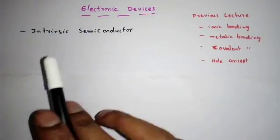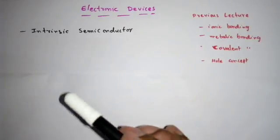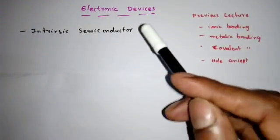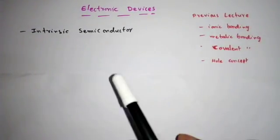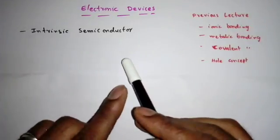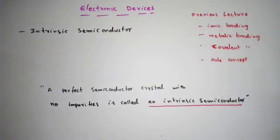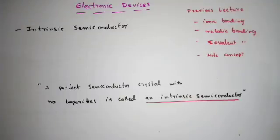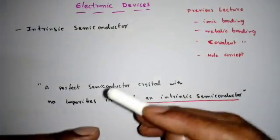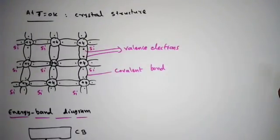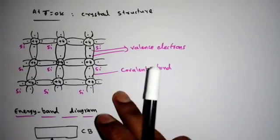An intrinsic semiconductor is a perfect semiconductor — if we don't add any impurities, that semiconductor is called an intrinsic semiconductor. If we take silicon atoms and bring a large number of them together, that is nothing but an intrinsic semiconductor. A perfect semiconductor crystal with no impurities is called an intrinsic semiconductor. We'll now see how we make electrons free carriers in such a perfect semiconductor by looking at its crystal structure.